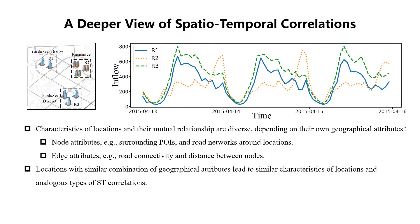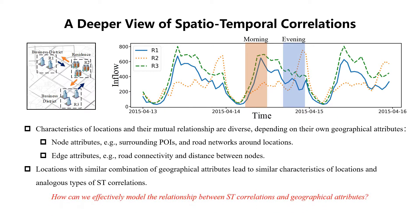In general, citizens usually commute from home to their workplaces in the morning, while returning at night. Thus, business districts R1 and R3 witness similar upward trends of inflows in the morning, while residential district R2 sees a different rush hour in the evening. So, how can we effectively model the relationship between ST correlations and geographical attributes?